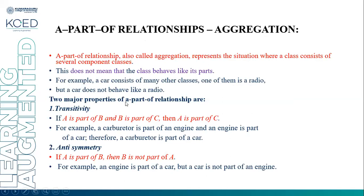Two major properties of the part-of relationship are transitivity and antisymmetry. Transitivity says: if A is a part of B, and B is a part of C, then A is a part of C. For example, a carburetor is a part of an engine, an engine is a part of a car, therefore a carburetor is a part of a car.